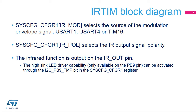To generate infrared signals, the following software configuration is required. The IR mod field in the SYSCFG_CFGR1 register controls the multiplexer in charge of selecting the source of the modulation envelope signal.